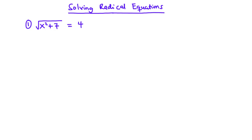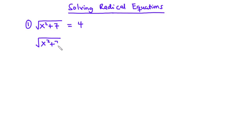Hello and welcome back to this channel. In today's video, we are going to learn how to solve radical equations. Now let's start by solving the simplest of examples. In solving radical equations, the first thing you may want to do is to remove or do away with the radical or the square root. So let's rewrite the question: we have the square root of x squared plus 7 equals 4.